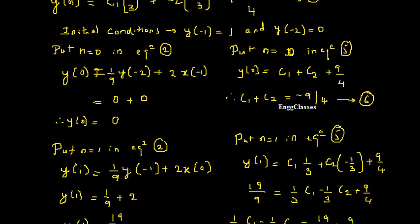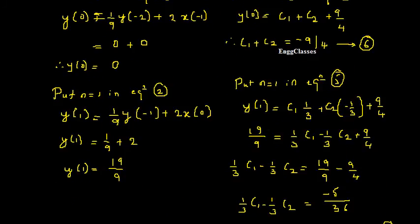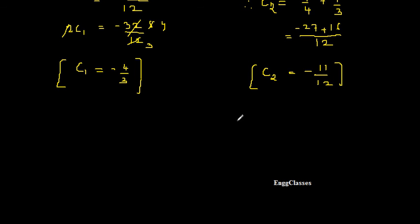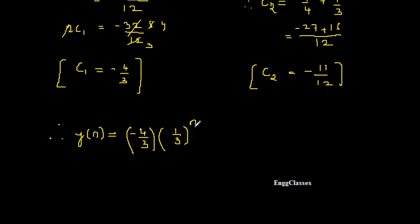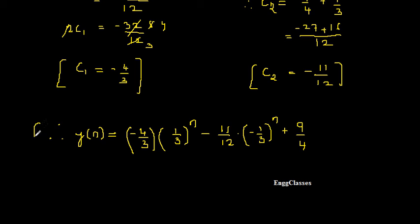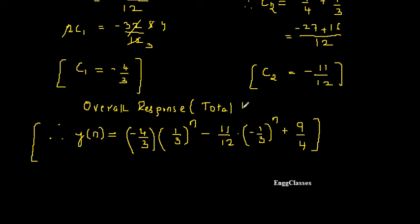Substituting C1 = -4/3 and C2 = -11/12 into equation 5, the final total (overall/complete) response is: y[n] = (-4/3)·(1/3)^n + (-11/12)·(-1/3)^n + 9/4. This is the complete expression for the total response.